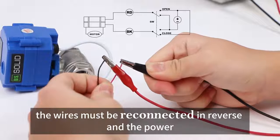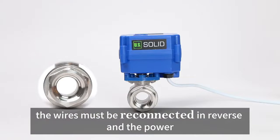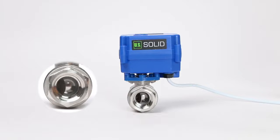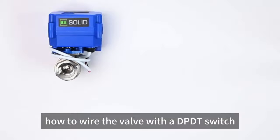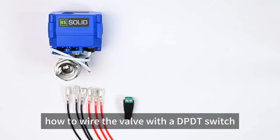To close the valve, the wires must be reconnected in reverse and the power turned on again. Now, let's take a look at an example of how to wire the valve with a DPDT switch.